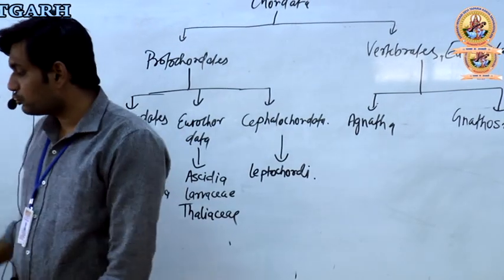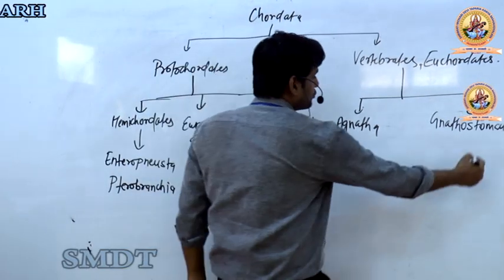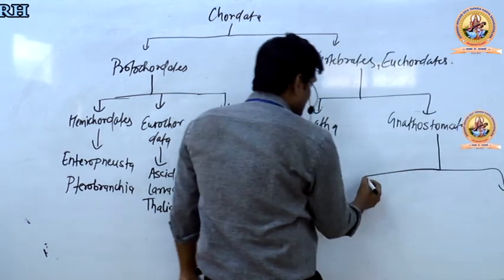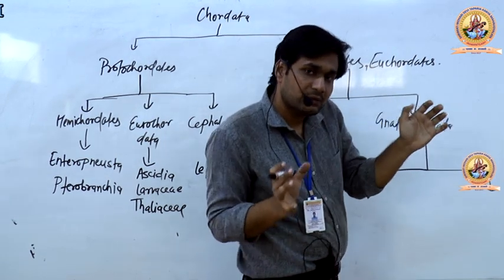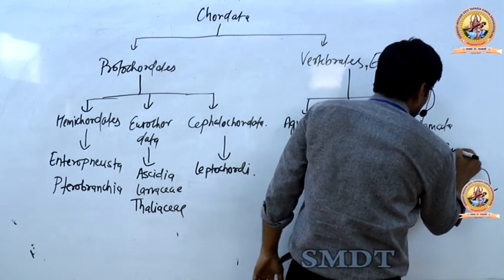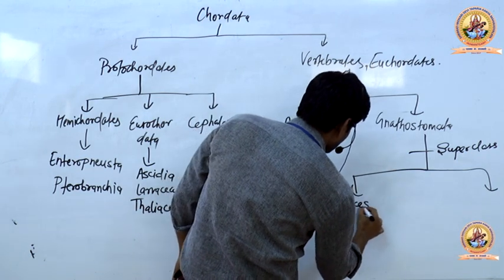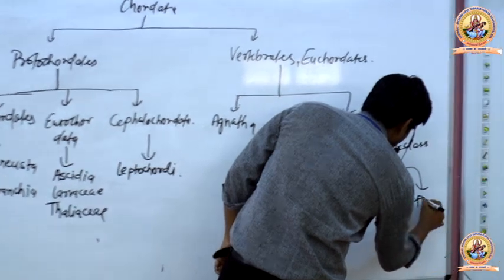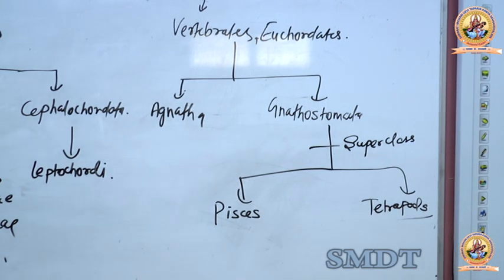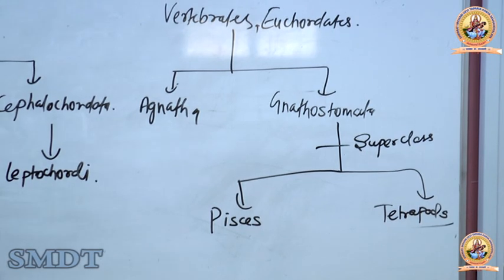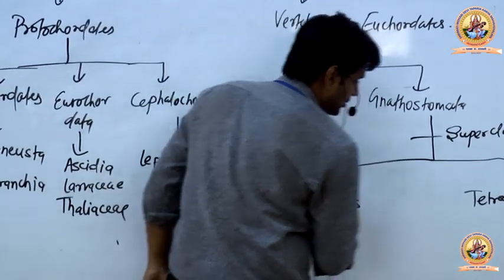In Vertebrata, Gnathostomata is classified into two superclasses: Pisces and Tetrapoda. Under Pisces, you get Placodermy, Chondrichthyes (Chondrocytes), and Osteichthyes. These are the three classes under superclass Pisces. And then Tetrapoda is the other superclass under Gnathostomata.